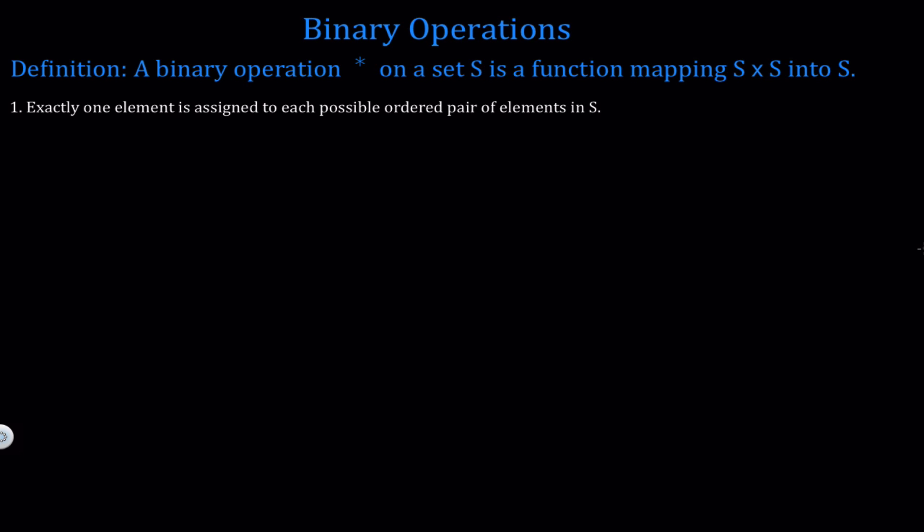The first condition is that exactly one element is assigned to each possible ordered pair of elements in S. This condition is really just making sure that it's in fact a function, because a function maps one element to another element — it can't map one element to two different elements. The second condition says that for each ordered pair of elements of S, the element assigned to it is again in S. Let's look at an example.